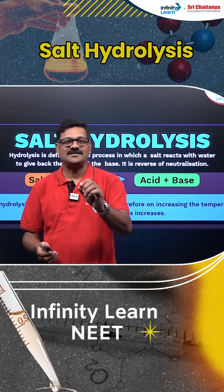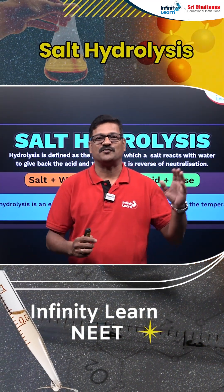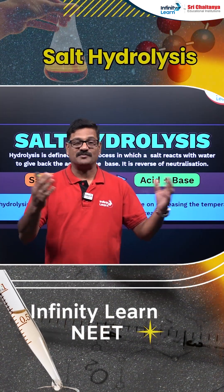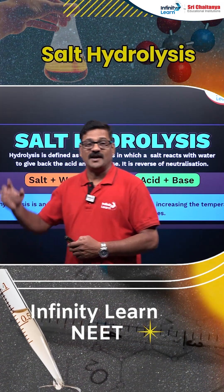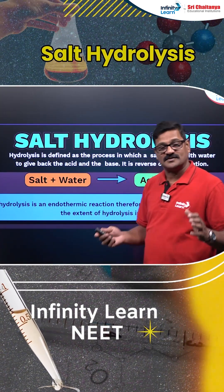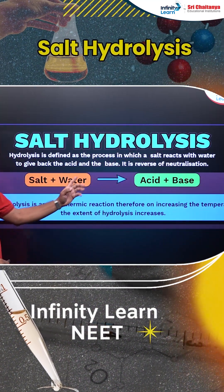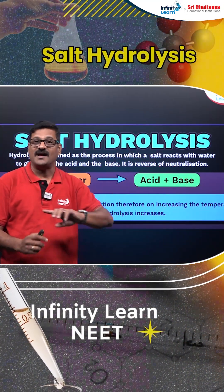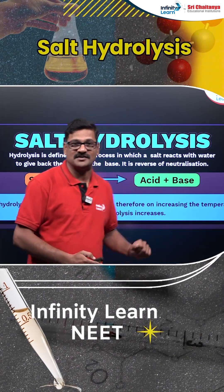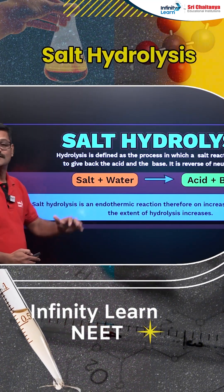Neutralization is a process where an acid reacts with a base to form a salt and water, which is an exothermic process. Salt hydrolysis, on the other hand, is a process where a salt reacts with water to give rise to an acid and a base. It is the reverse process of neutralization and it is an endothermic process.